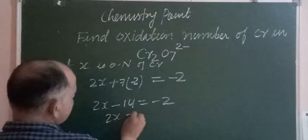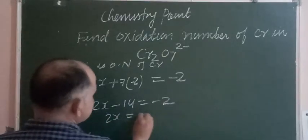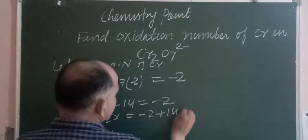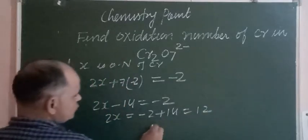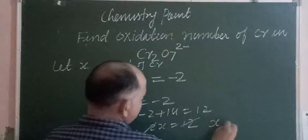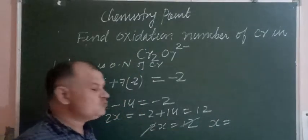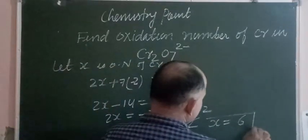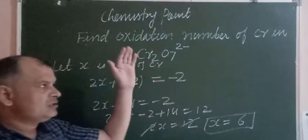So 2x is equal to 12. And we divide this 12 by 2, we got x equal to 6. So x, which is the oxidation number of chromium in Cr2O7 2- ion.